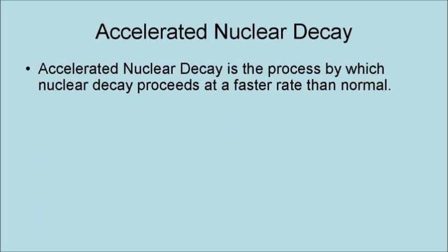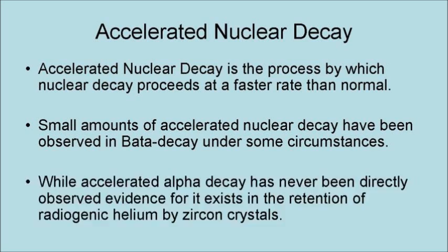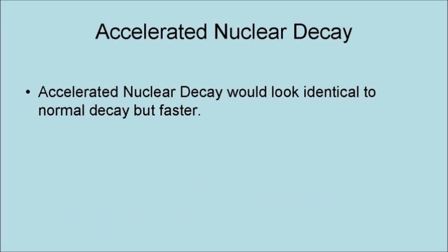Accelerated nuclear decay is the process by which nuclear decay proceeds at a faster rate than normal. Small amounts of accelerated nuclear decay have been observed in beta decay under some circumstances. While accelerated alpha decay has never been directly observed, evidence for it does exist in the retention of radiogenic helium by zircon crystals. Accelerated nuclear decay would look identical to normal decay, but faster.